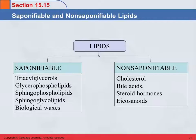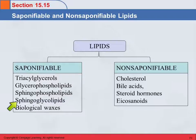So that was the division of lipids based on their functions. They can also be categorized as whether they're saponifiable or not. These triacylglycerols, glycerophospholipids, sphingophospholipids, sphingoglycolipids, and biological waxes — what do these things have in common?